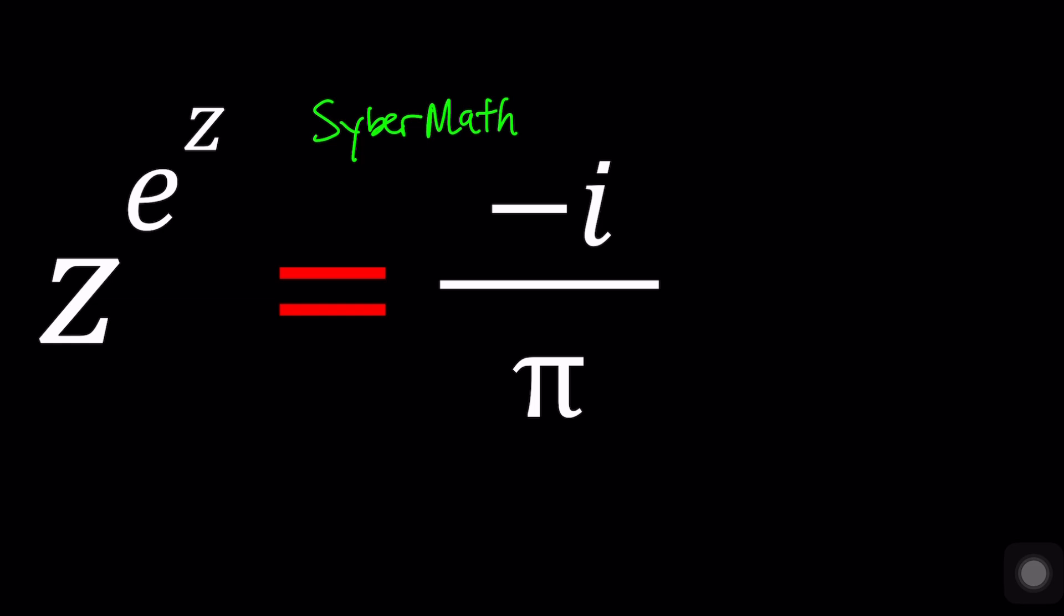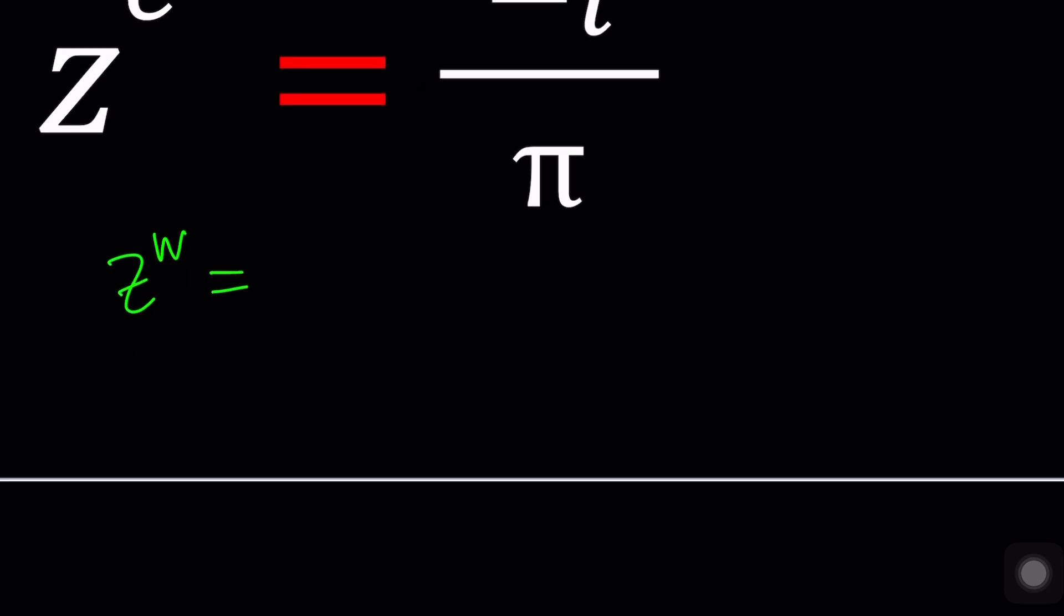One of the things you can definitely do is using the complex exponentiation. Whenever you have something like z to the power w, it can be written as e to the power w ln z, where z and w are both complex numbers. Otherwise, how do you define a complex number to another complex power, right? I mean, what is 1 plus i to the power i? You're going to write the 1 plus i, i times and multiply? No. What is i times? i is imaginary, right? How can you do something an imaginary number of times? It's not even a whole number. I mean, it's not even real. Forget about whole numbers. So that's why we have this definition with the exponential, which is pretty nice.